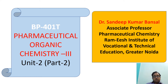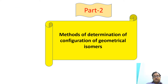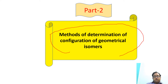Hello everyone. Today I am going to discuss the second part of Unit 2 of the subject Pharmaceutical Organic Chemistry 3rd. In this part we will discuss about the methods of determination of configuration of geometrical isomers.